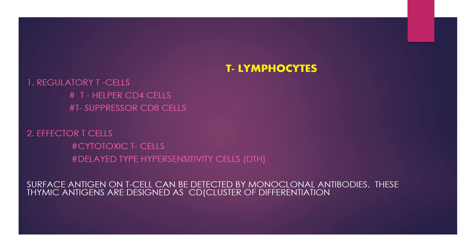T lymphocytes are of two main categories. First, regulatory T lymphocytes, which include T helper (CD4) cells and T suppressor (CD8) cells. Second, effector T cells, which include cytotoxic T cells and delayed-type hypersensitivity cells. Surface antigens on T cells can be detected by monoclonal antibodies. These thymic antigens are designated as CD — the full form of CD is cluster of differentiation.